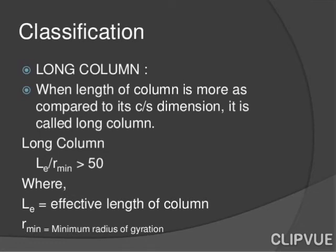Long column: When the length of the column is more as compared to its cross-sectional dimension, it is called a long column. The criterion is Le/R_min should be greater than 50, where Le is the effective length of the column and R_min is the minimum radius of gyration.